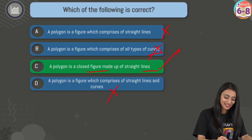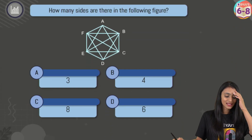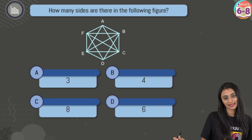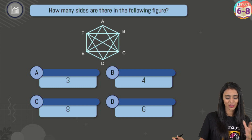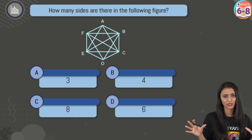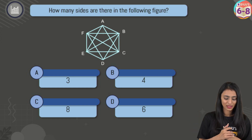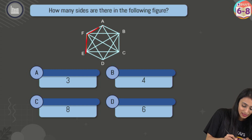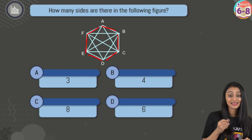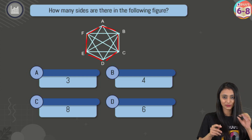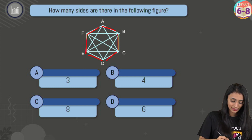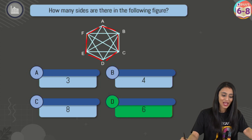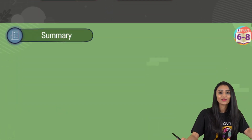How many sides are there in the following figure — three, four, eight, or six? It looks a little tricky but just count the sides. There are six sides clearly visible — option D, six, is the right answer.